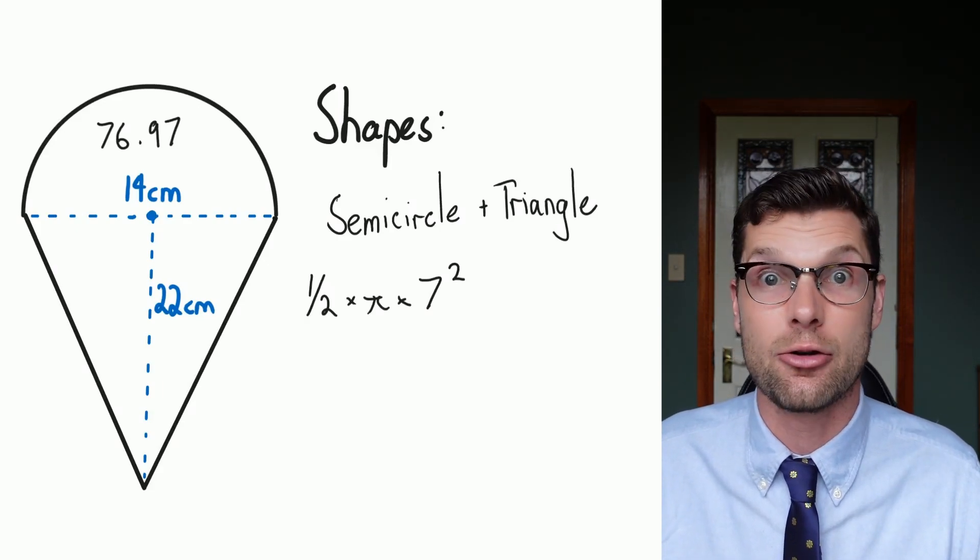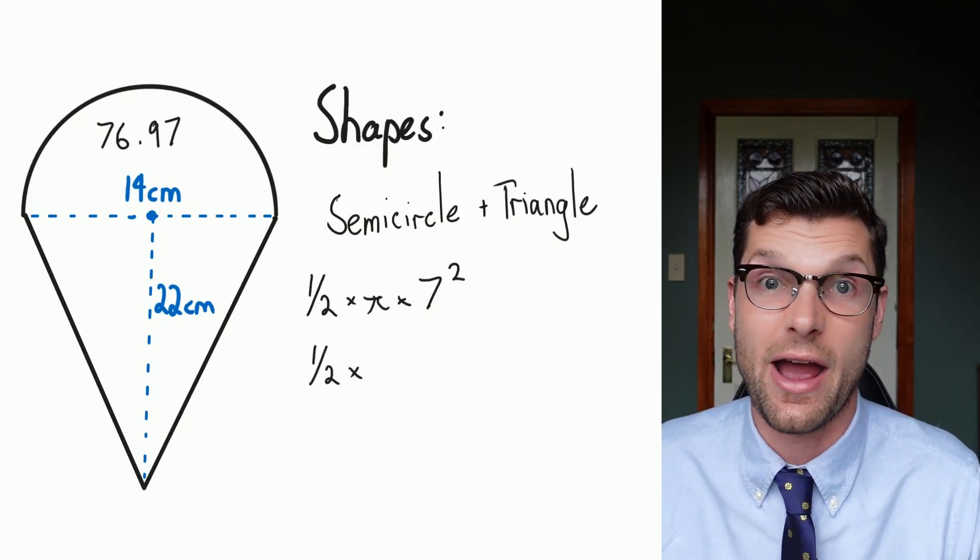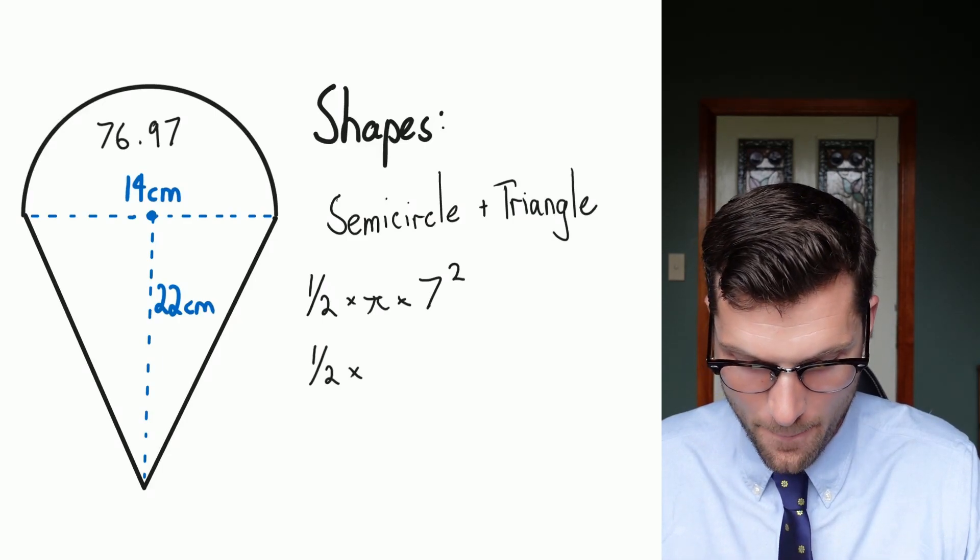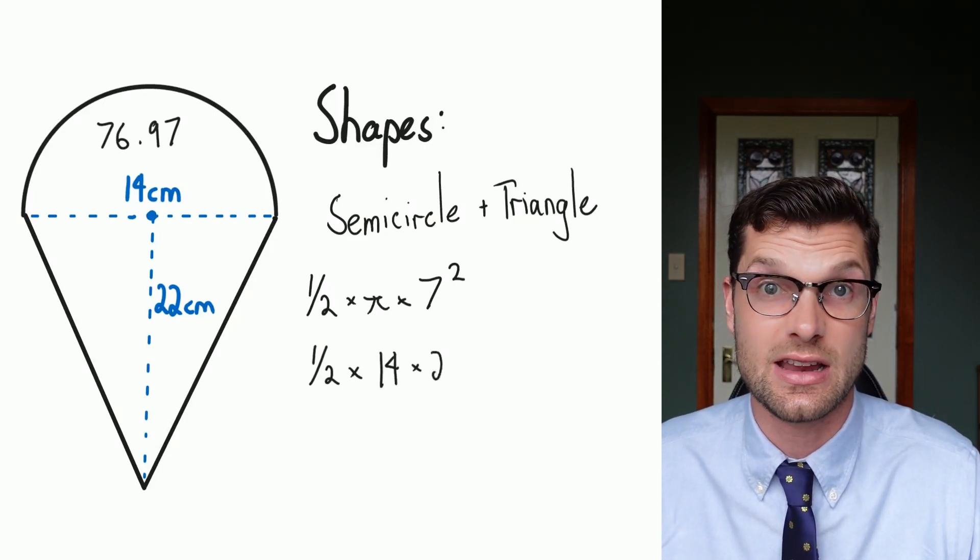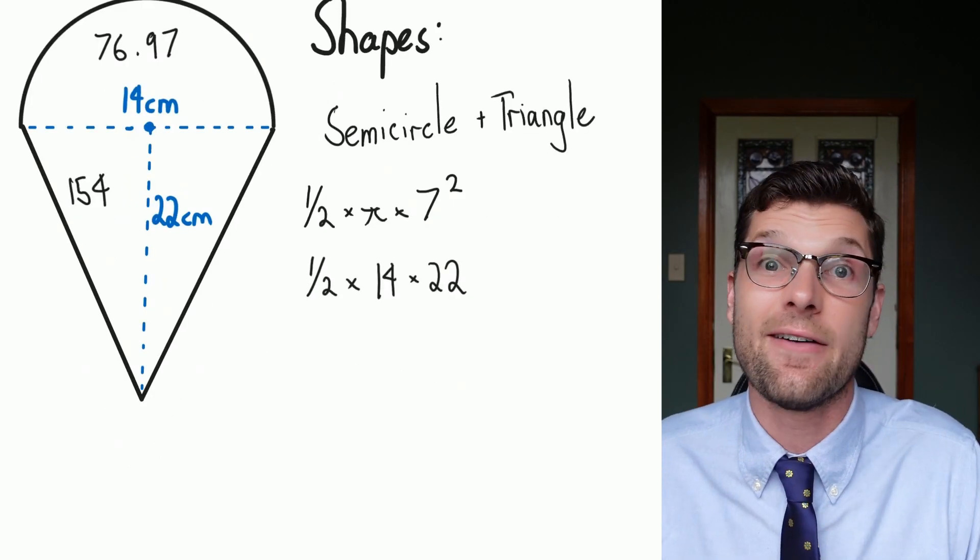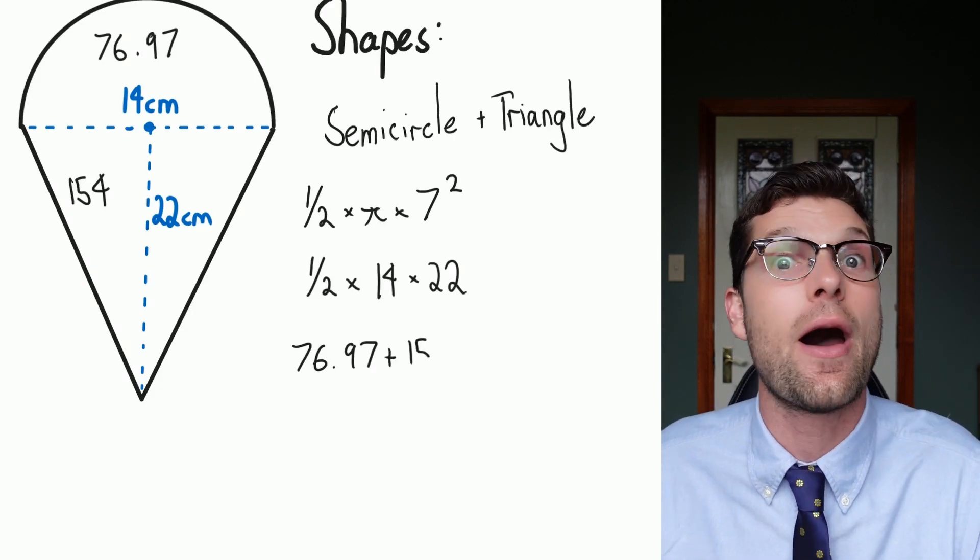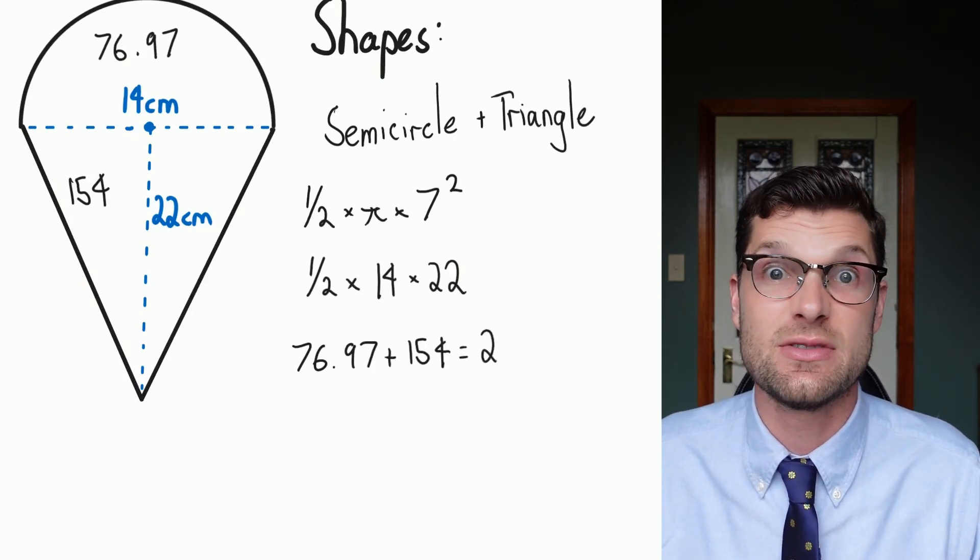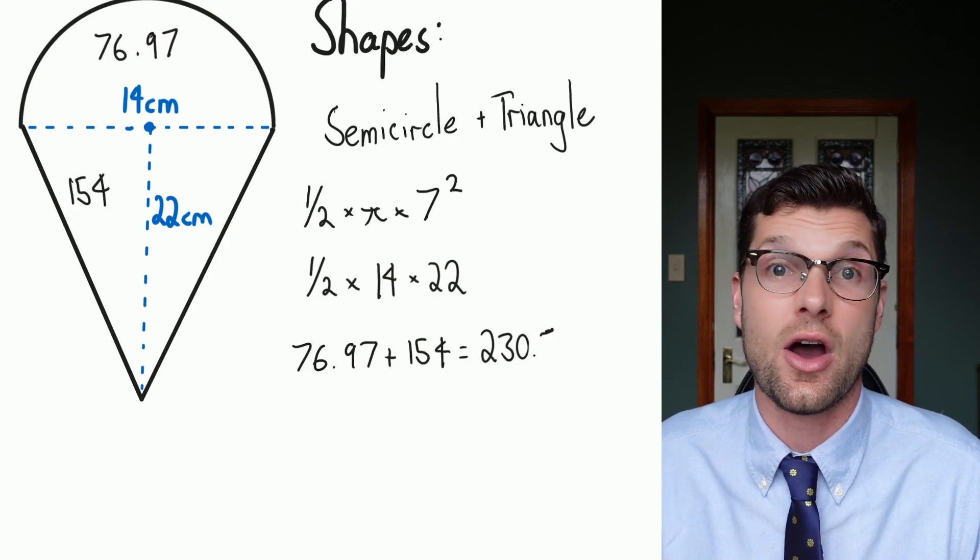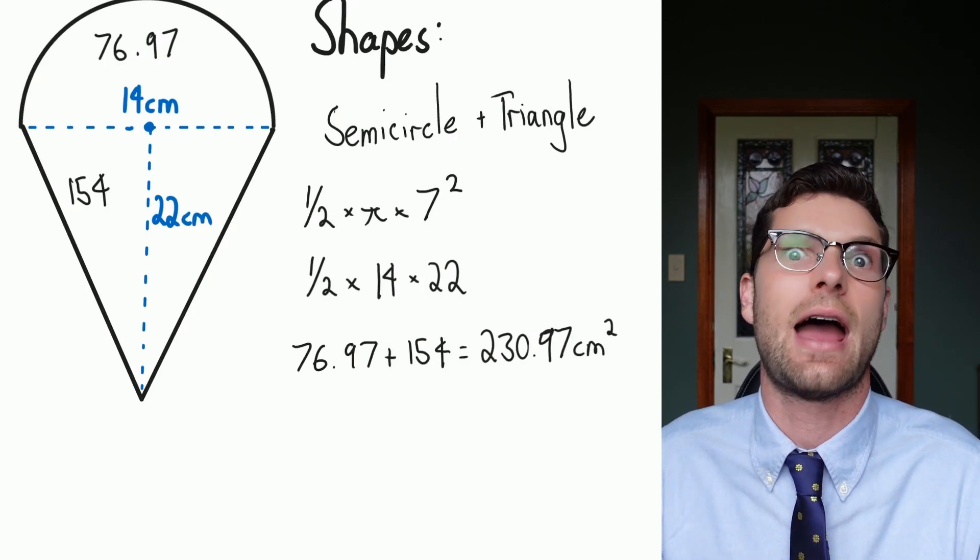Now I've just got to find out the area of the triangle. The area of a triangle is a half multiplied by the base which there is 14 multiplied by the 22 it goes down. Again throw that into your calculator and you get the answer 154. And now for our final step I've got to just plus these together. I've actually already written that so I know I need to do it. So if I throw those numbers into my calculator I get 230.97 and that's my final answer. Remember centimeters squared at the end there.